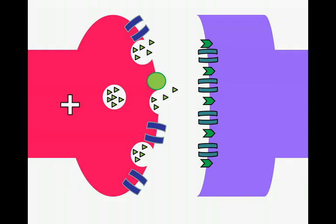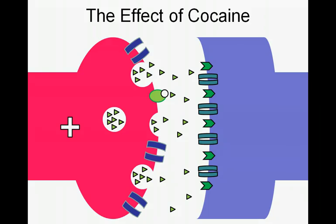The removal of neurotransmitters from the synapse is central to the understanding of the action of many psychoactive drugs. Cocaine specifically binds to dopamine reuptake pumps and blocks their ability to remove dopamine from the synaptic cleft. Dopamine levels remain high, binding the receptors on the postsynaptic neuron and triggering continuous nerve impulse stimulation.